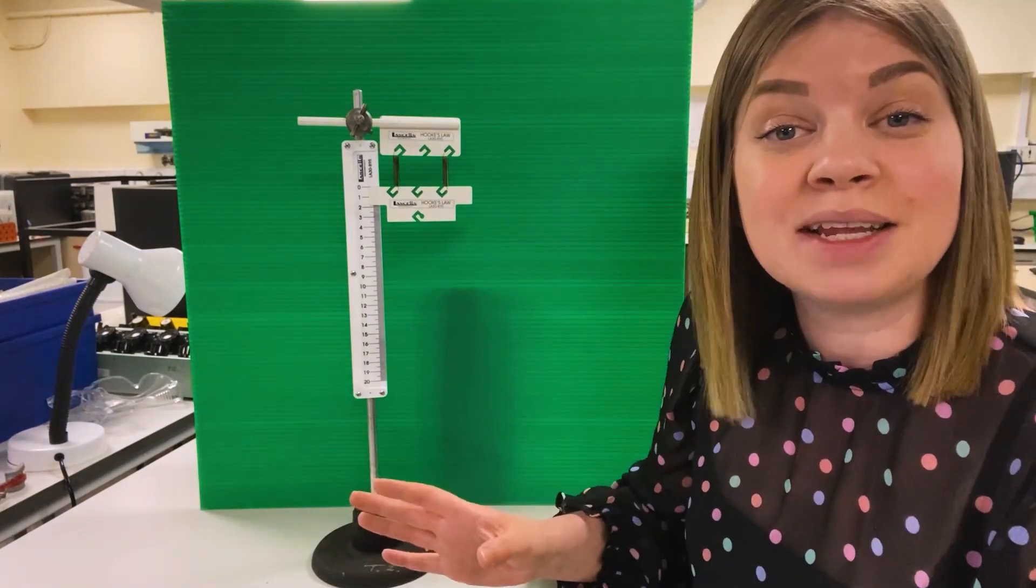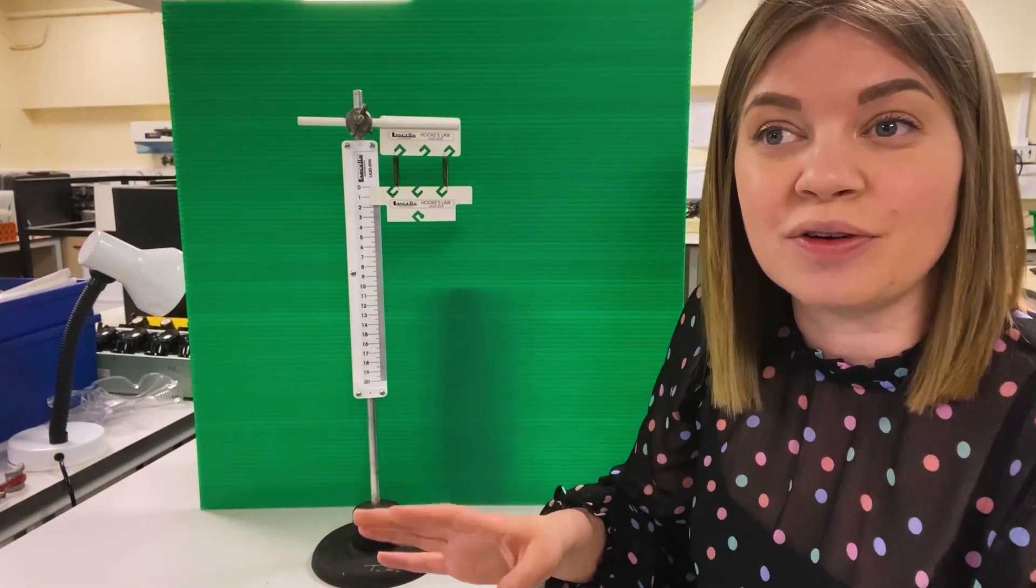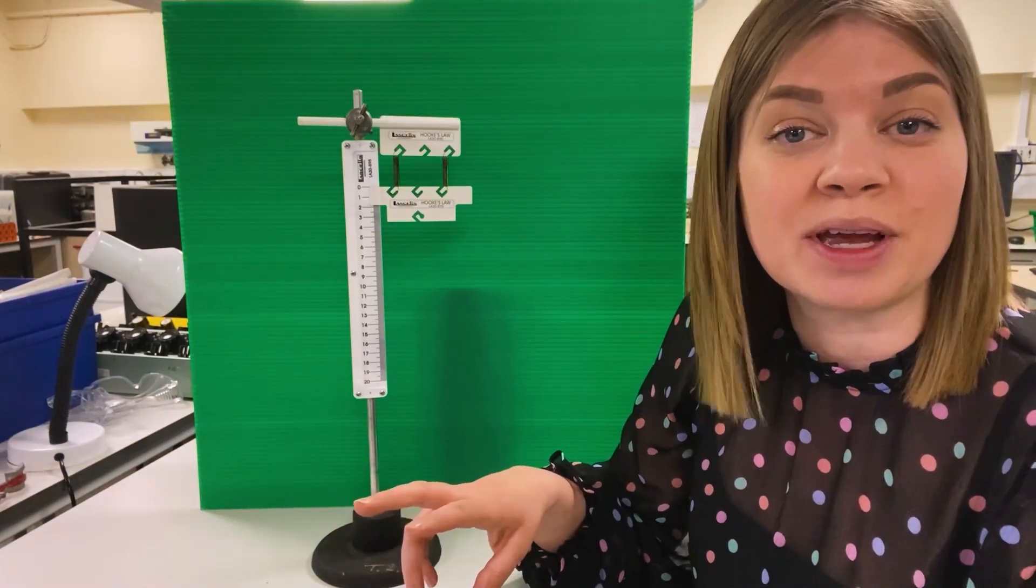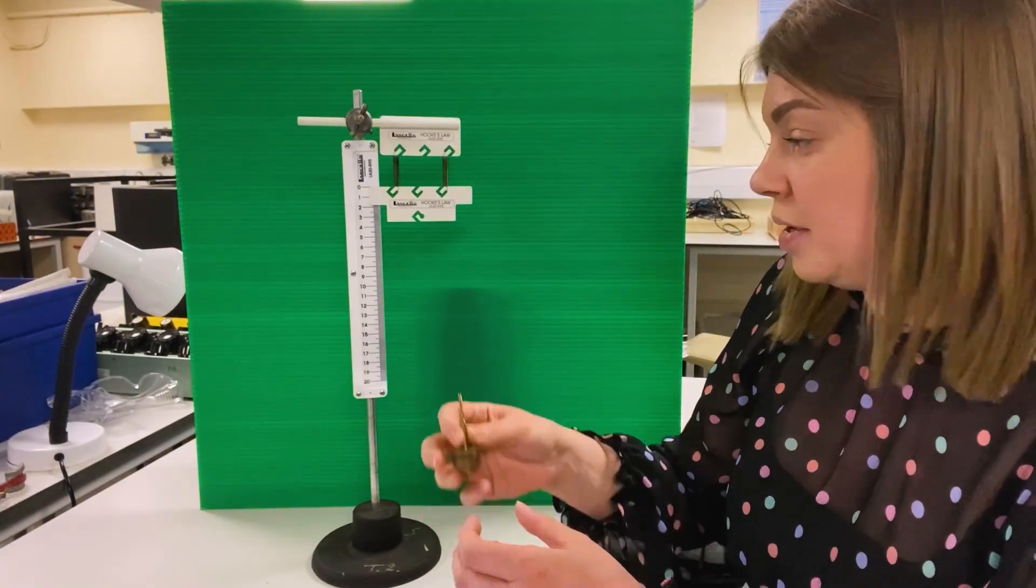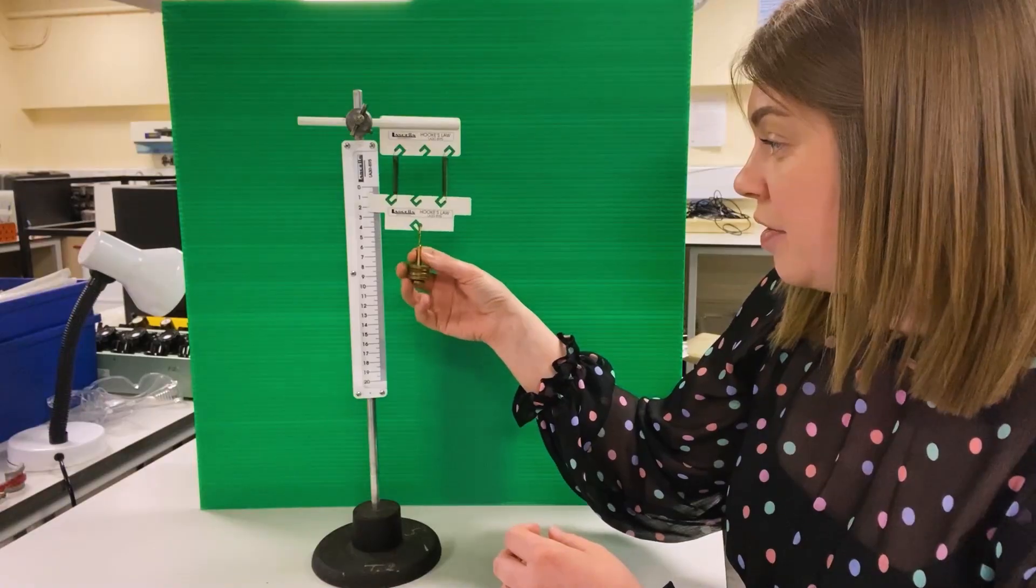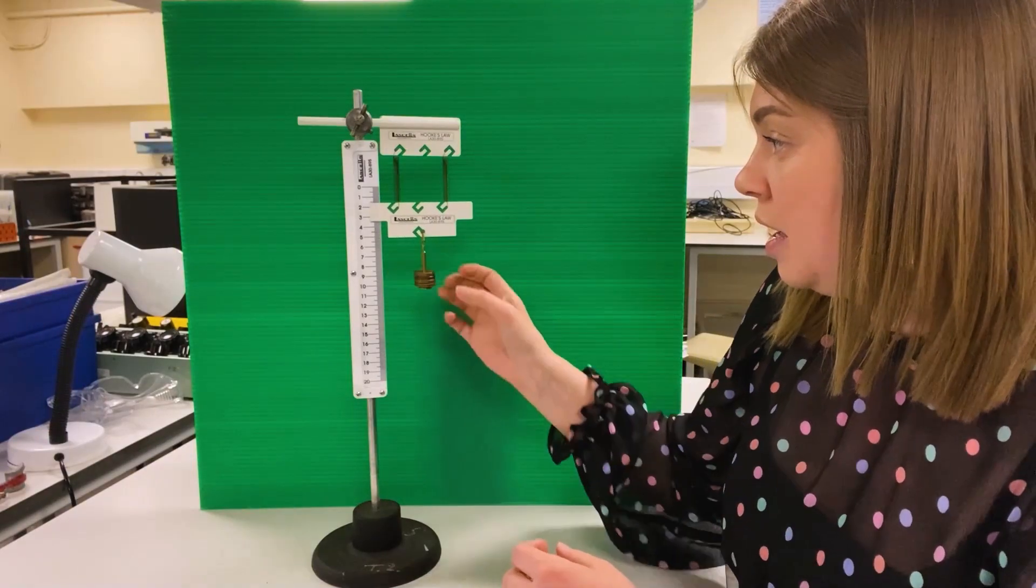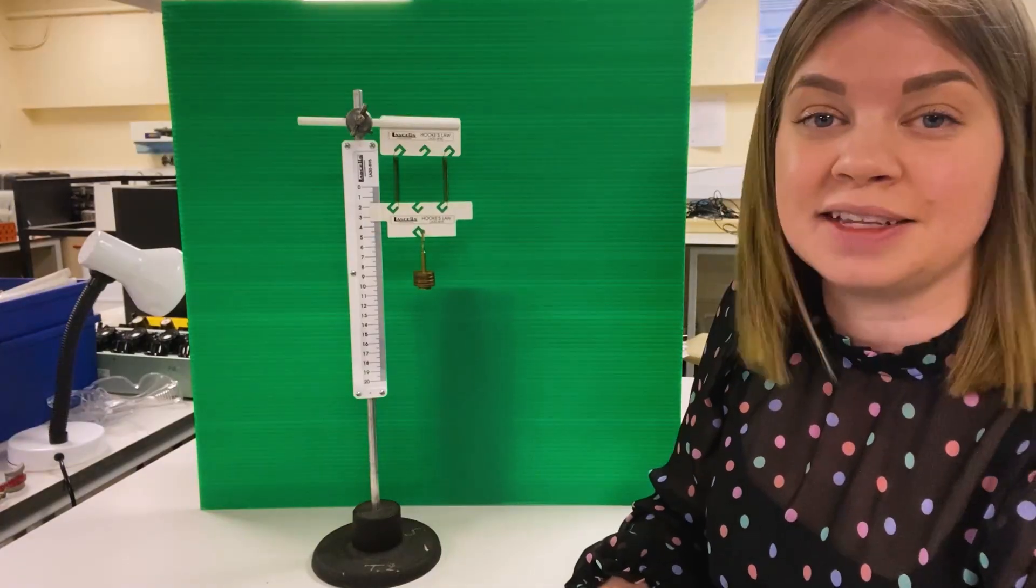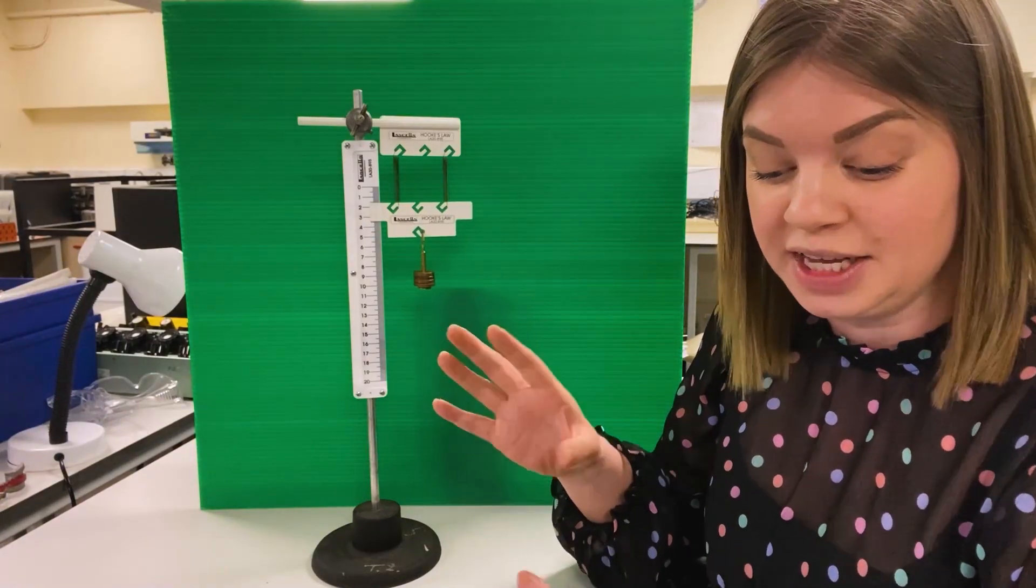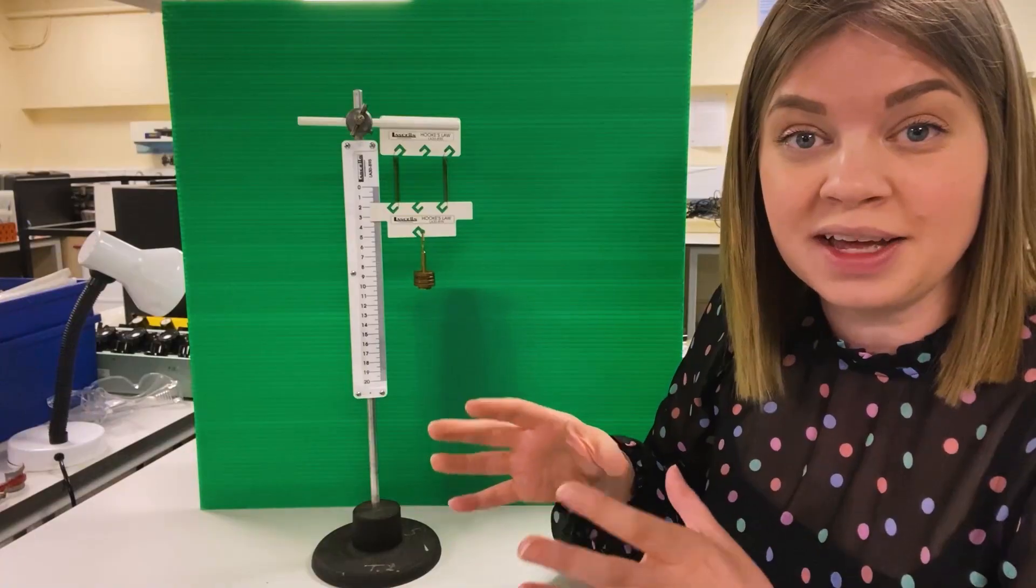The mass limit for this setup is 400 grams so I'm going to go from 0 to 400 in 50 gram increments and collect my data set. For the first point I am going to add 50 grams and then my extension reads 1.6 centimeters so that's my first data point. Now I'm going to speed through the rest of them and collect that data set.